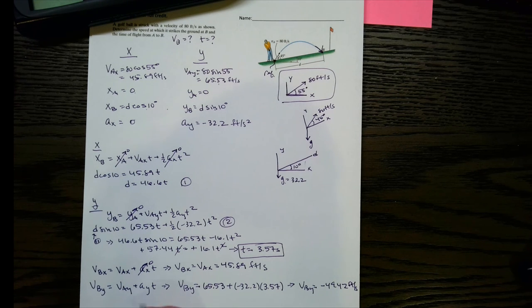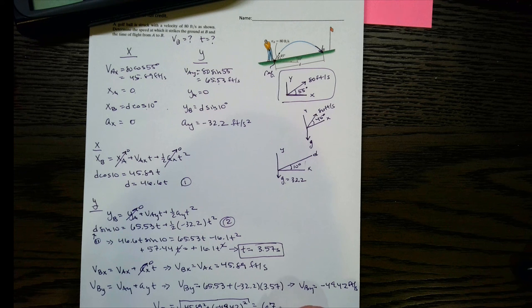And then we need the magnitude basically. So vb would be square root of vbx squared plus vby squared. And then take the square root, we get 67.44 feet per second.